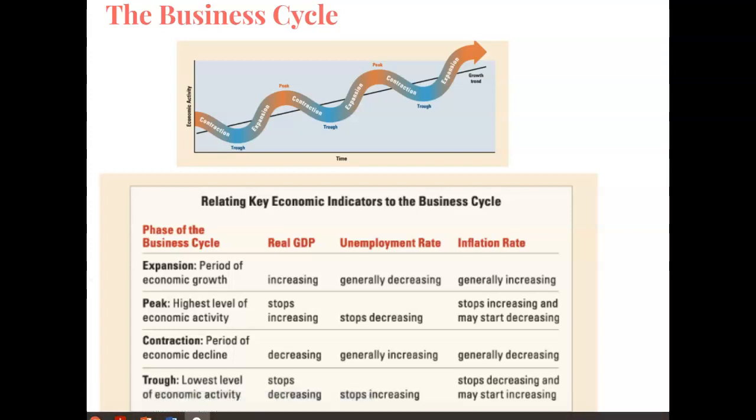When we look at the business cycle, it looks something like the snake that you see at the top of the screen. The business cycle goes through regular periods of expansion and contraction. Expansion is a period of economic growth. When we're in a period of expansion, real GDP is increasing, the unemployment rate is generally decreasing, and the inflation rate is generally increasing.